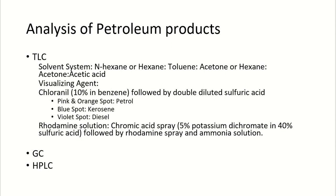Analysis of petroleum products: first is the filter test already discussed. Next is TLC — the solvent system used is N-hexane, or hexane-toluene-acetate, or hexane-acetone-acetic acid. The visualization agent is 10% chloranil in benzene followed by diluted sulfuric acid; petrol gives pink and orange spots, kerosene gives blue spots, and diesel gives violet spots. Another spraying reagent is rhodamine solution, or chromic acid spray followed by rhodamine spray and ammonia solution. Chromic acid is prepared using 5% potassium dichromate in 40% sulfuric acid.